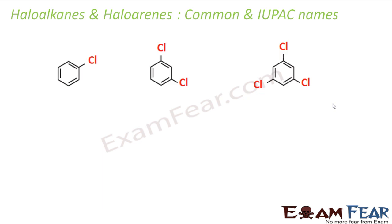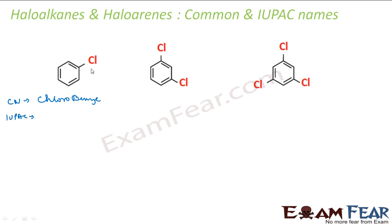Let's take these examples — these are all my haloarenes now. This compound: we all know this compound. This is nothing but chlorobenzene. So the common name is chlorobenzene — one chlorine attached to benzene. The IUPAC name is also chlorobenzene, because it is one chloro with the benzene.